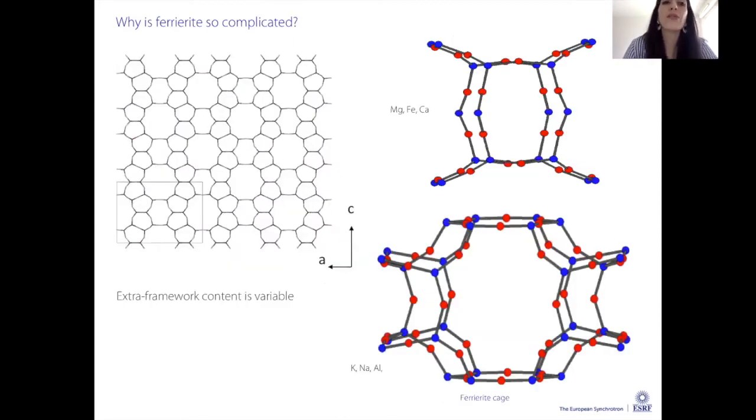Another reason why ferririte is complicated is because the extra framework content is variable. These are two cages - one is the ferririte cage that takes its name from this material. You can have different content inside: in one cage magnesium, iron, or calcium; in the other sodium, potassium, and aluminum.